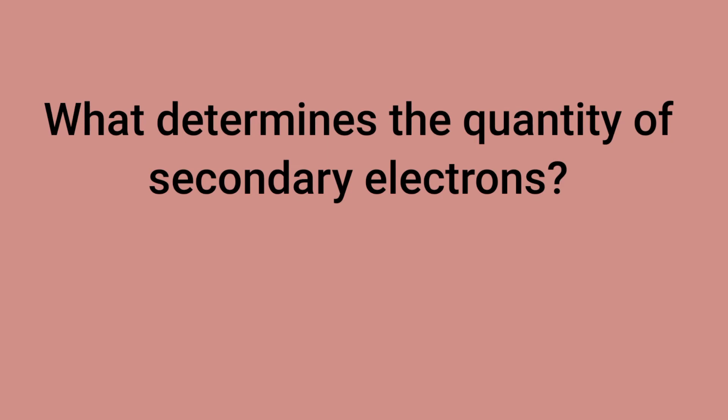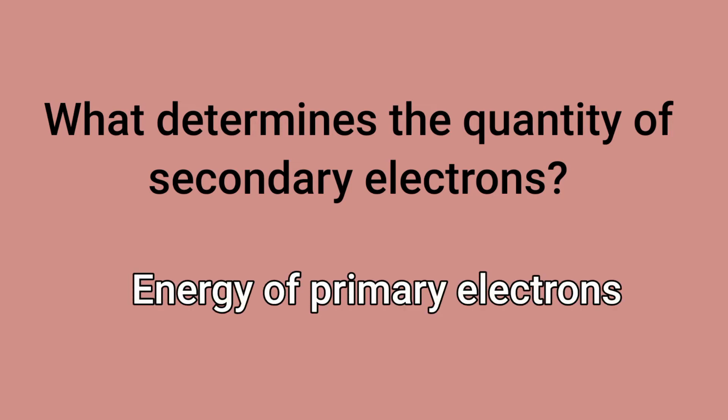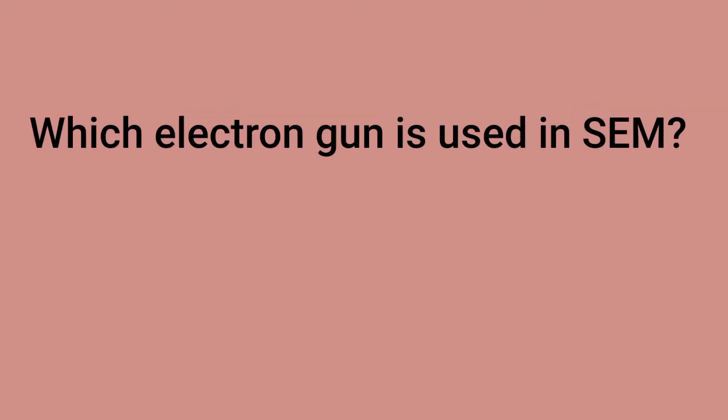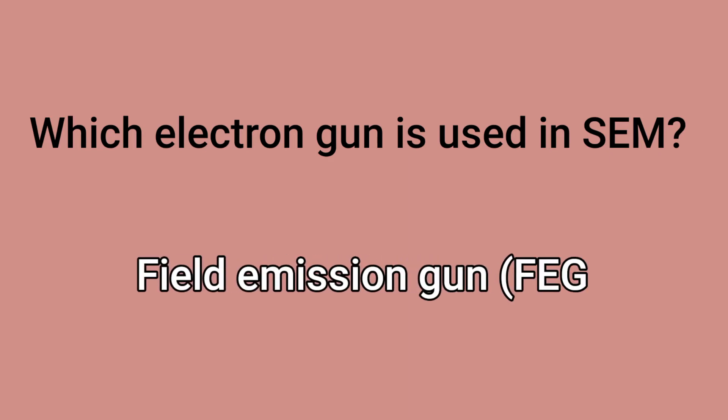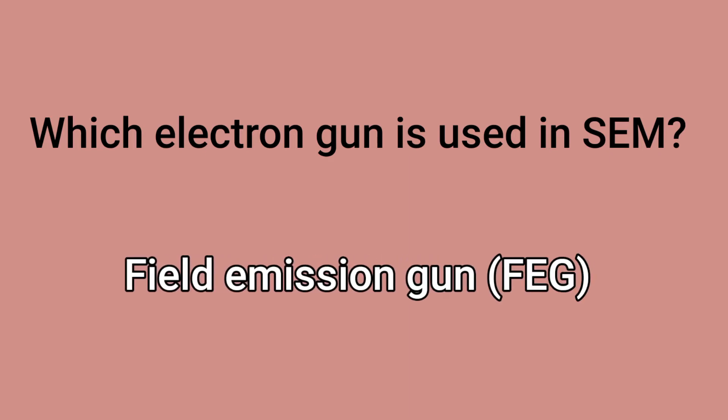What determines the quantity of secondary electrons in scanning electron microscopy? One of the key factors is the energy of the primary electron. Which electron gun is used in scanning electron microscopy? We use a field emission gun, or FEG.